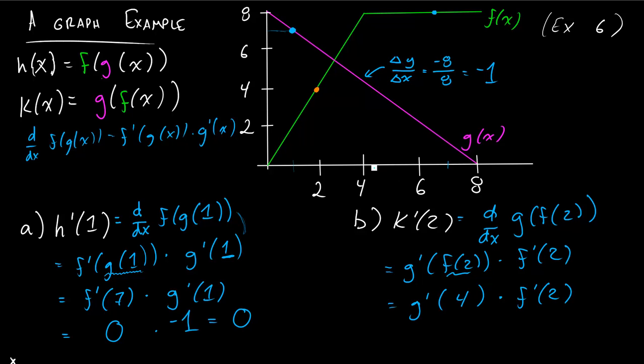So g prime of 4. Well, let's look at where x is equal to 4 in the graph g. So sorry if you're mixing the colors here. But the reason why these two colors are blue is because f prime of 7 is there. g prime of 1 is there. And the reason why these two colors are orange is because g prime of 4 is here. We're looking at the slope here. And f prime of 2, we're going to want to look at the slope here, right? At x equals 2.